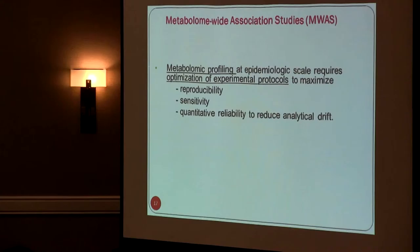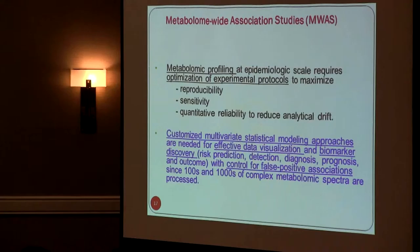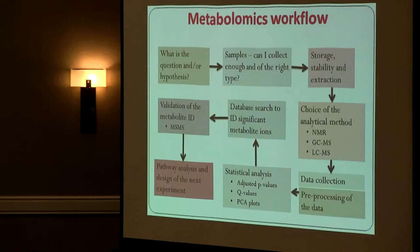In genome-wide association studies, cohorts of people are enrolled before they develop any disease. We collect data about their exposure, lifestyle, diet, and family history, then follow them and collect samples over time. If metabolomics profiling is also done alongside genomics, SNP variation, or epigenomics, we can integrate all of this. Based on models, we predict which population or group of people is likely to develop disease, and then it can be modified for a personalized basis. Early detection of disease or markers is critical.